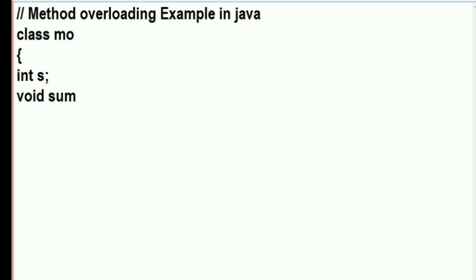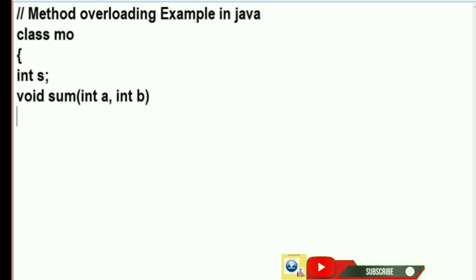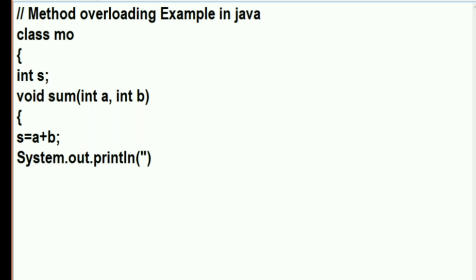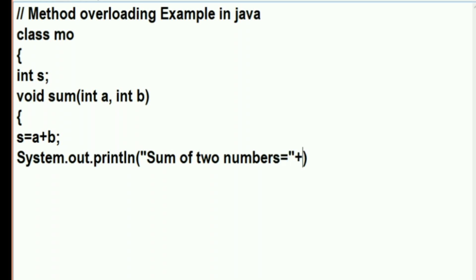I have declared an integer type variable here. The first method is 'void sum' — this method will accept two arguments: int a and int b. Now let's write the body of the method. Whatever arguments we get, we add them: a + b. We will print the value of the sum using System.out.println, displaying 'sum of two numbers' concatenated with the variable s.